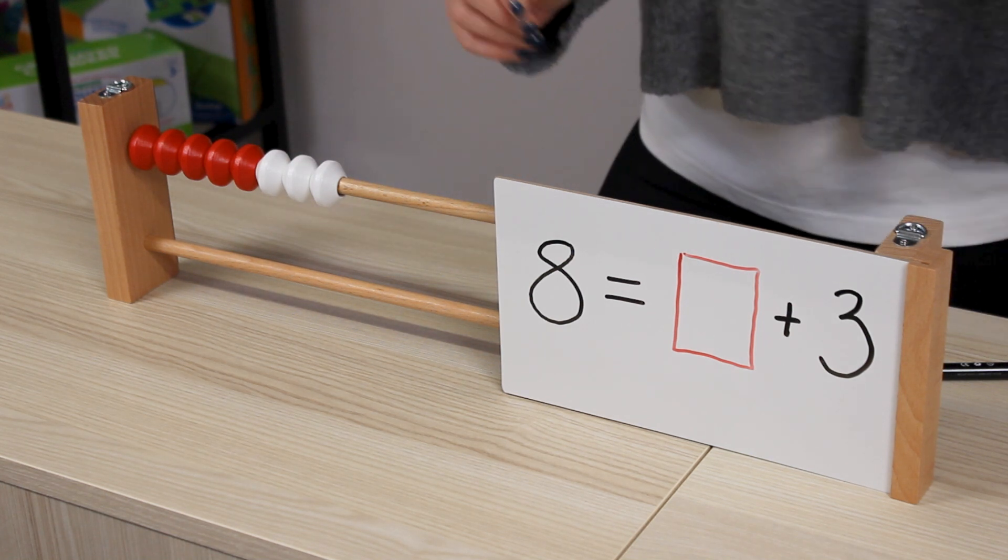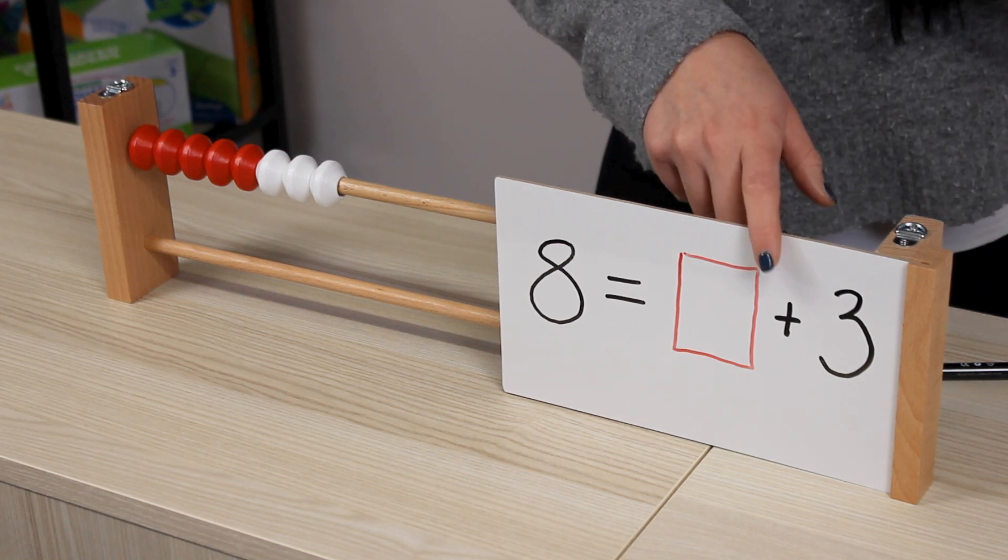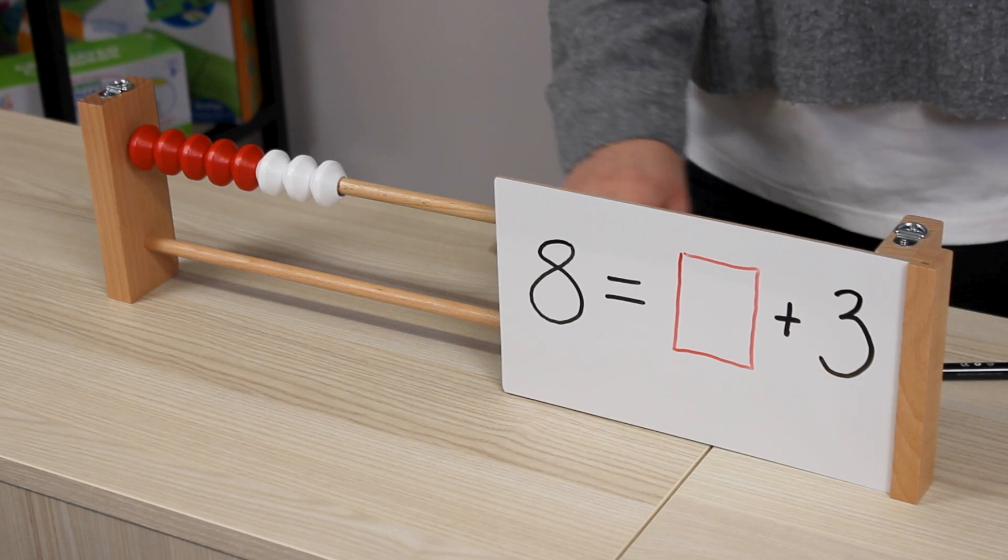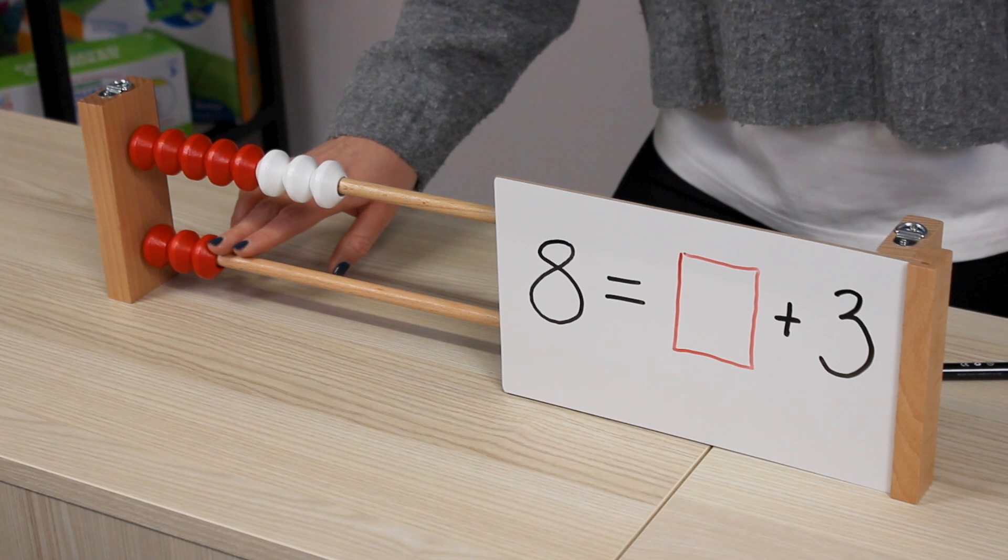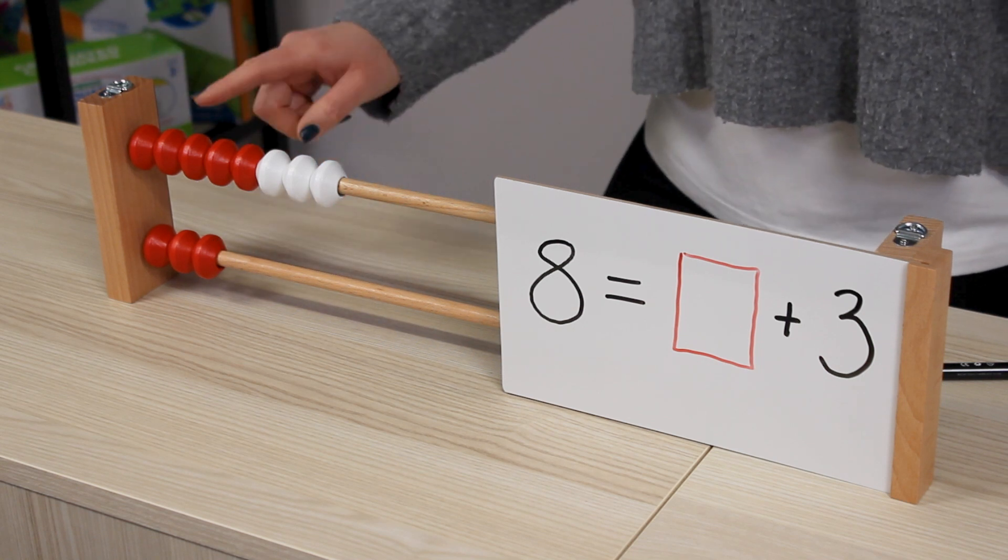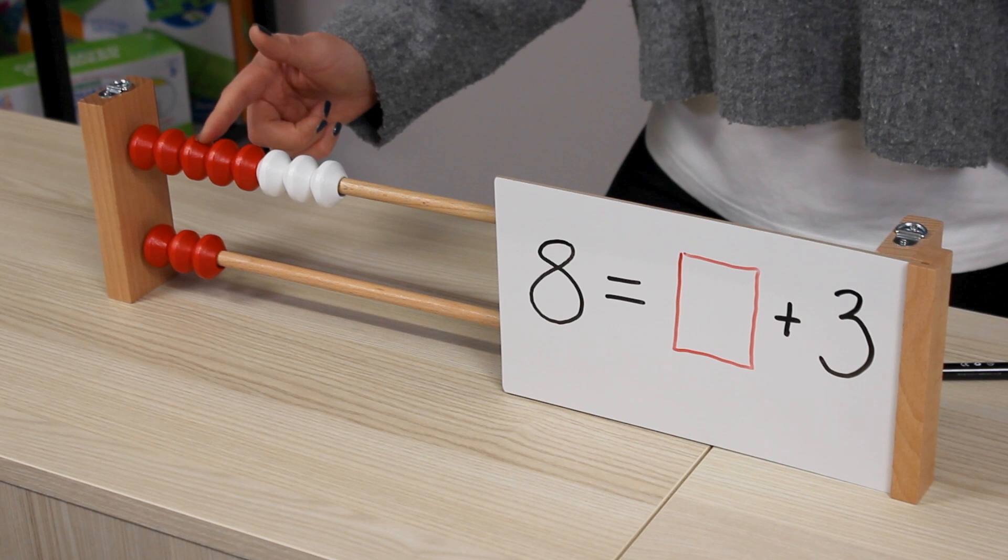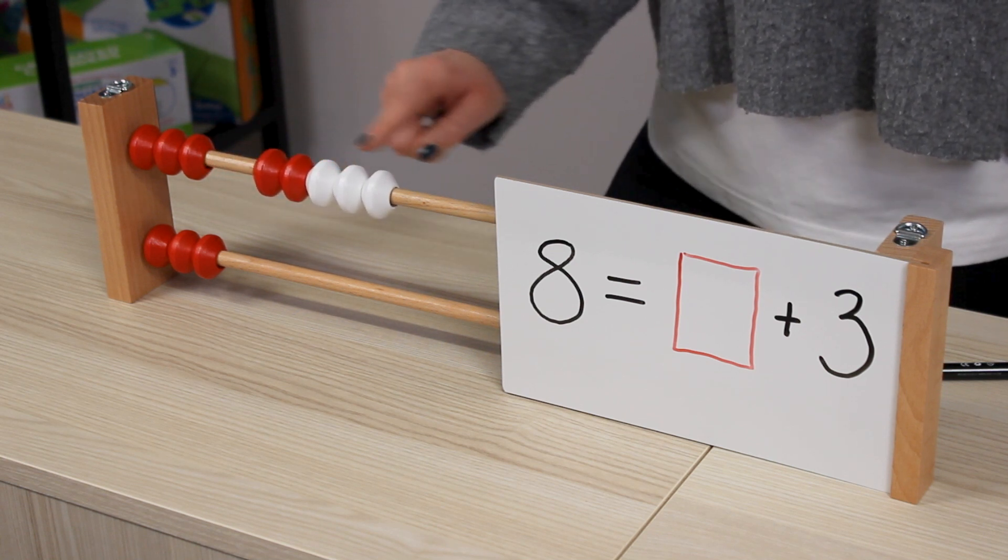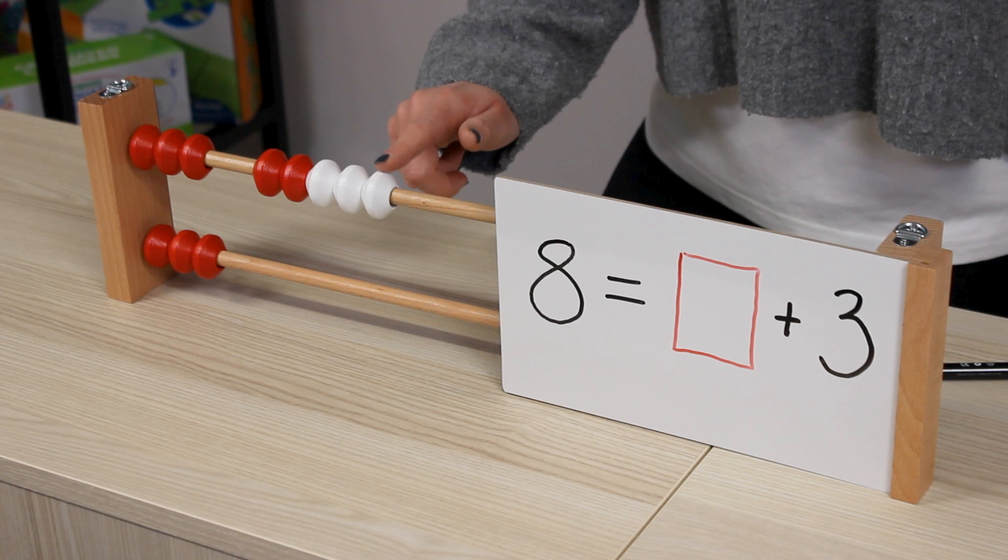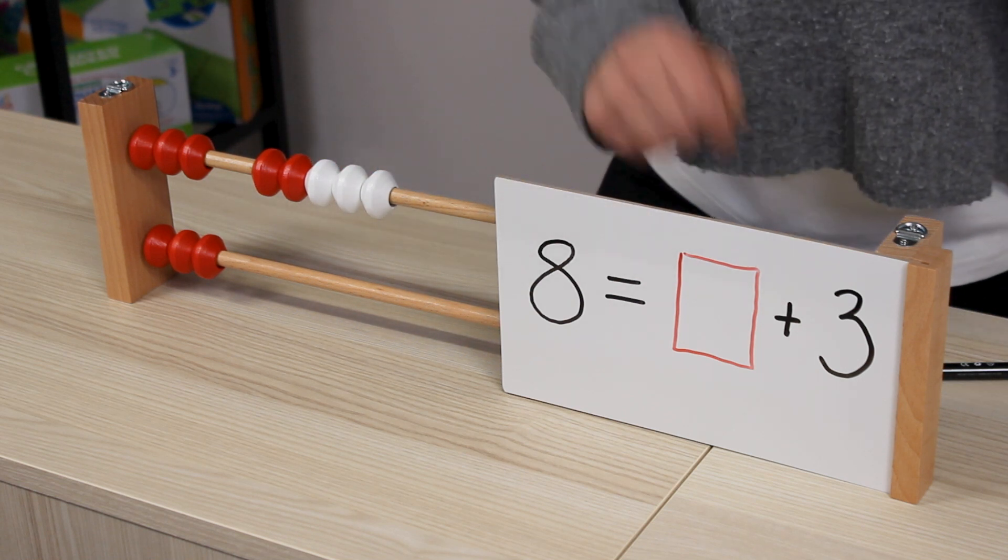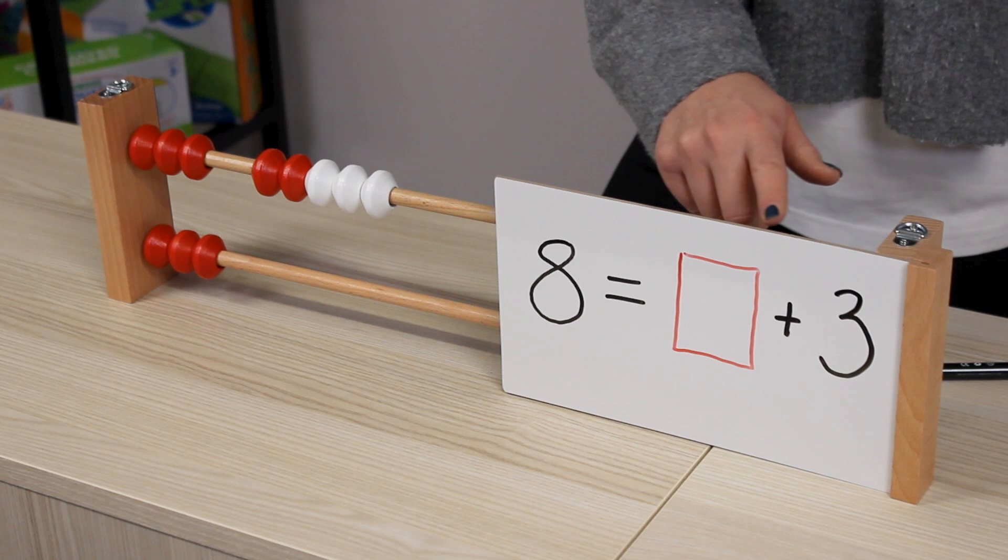Now to explore what the missing part could be we know that we have got our three so we're going to bring that across. Now we can compare those top rows and look for that missing part so we can see that if we've got our part of our three we can now explore that our missing part is one two three four five and add that into our number sentence.